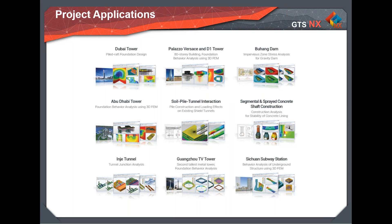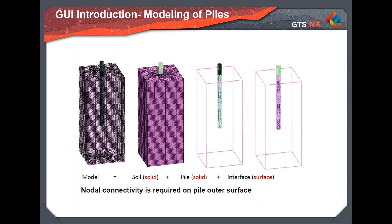For solid modeling of a pile, the best approach is to think of the most suitable 2D profile. For a single homogeneous soil layer with a circular pile, you need a rectangle and a circle. Set the work plane to XY, draw a 20x20 meter rectangle, then draw a circle at center (10,10) with a radius of 0.6 meters. Using the extrude command, select the rectangle, extrude it minus 20 meters to create the soil solid.